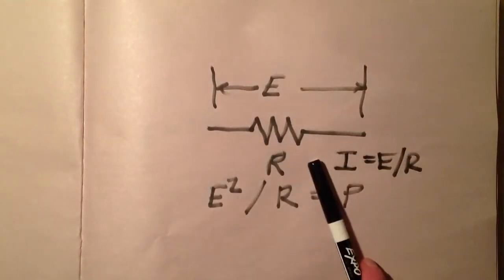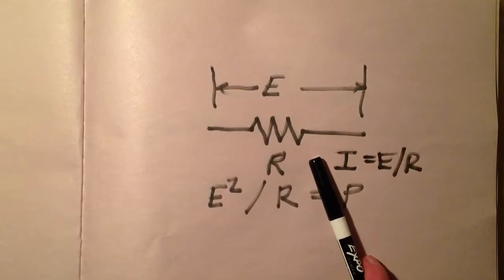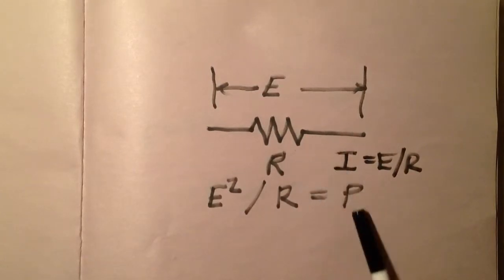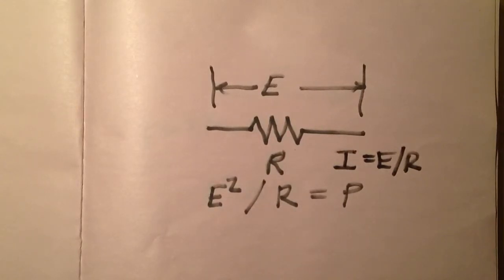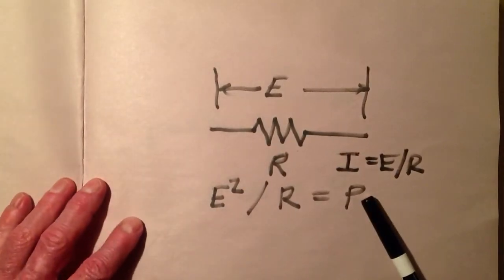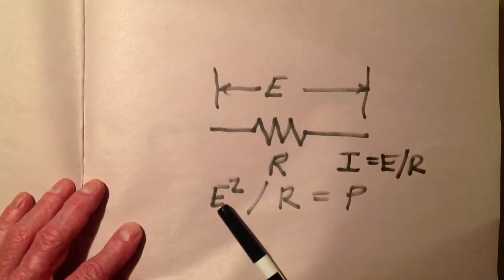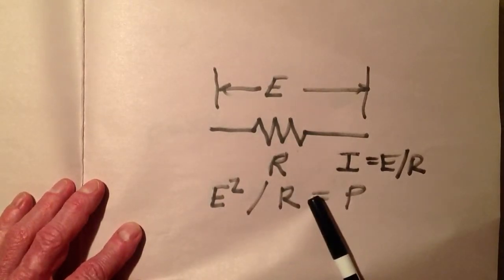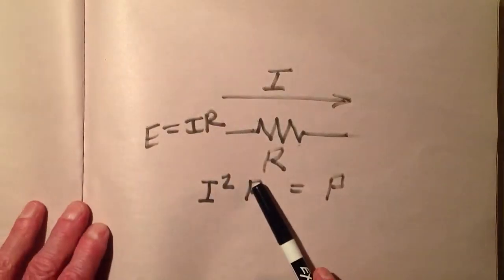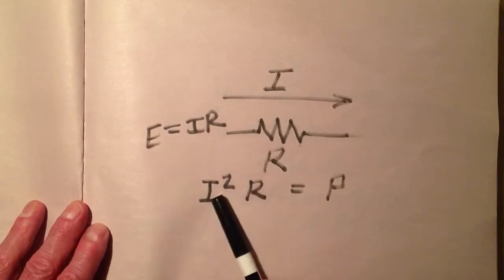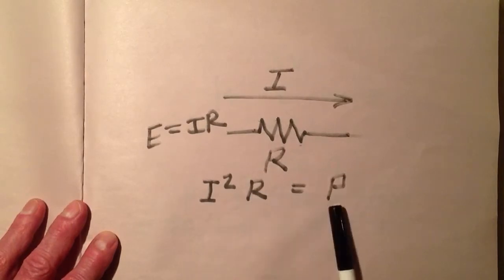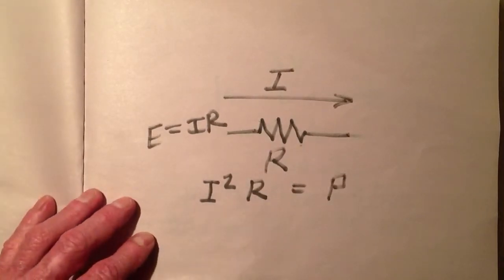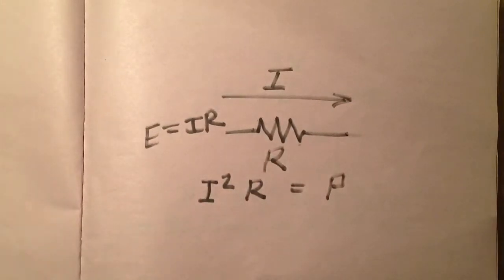The first thing is to note the formulas for power in watts in terms of voltage in volts and resistance in ohms. The power in watts equals the square of the voltage in volts divided by the resistance in ohms. If you know the current through a resistor in amperes, you can square that and multiply by the resistance in ohms to get the power in watts.